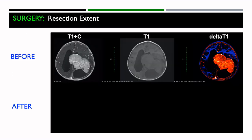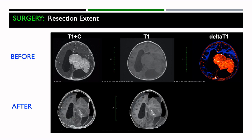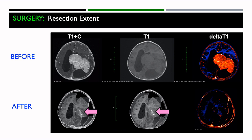This is an example of how delta T1 can be very helpful in determining resection extent — a 13-month-old patient. The pre-surgery post-contrast T1 plus C image clearly shows the tumor, and the delta T1 clearly delineates it. Post-surgically, it's very difficult to discern the post-contrast from the pre-contrast image since there's so much bright signal due to remaining blood products from surgery. You don't really know how much tumor remains, but the delta T1 maps make it clear that almost the entire tumor has been removed.